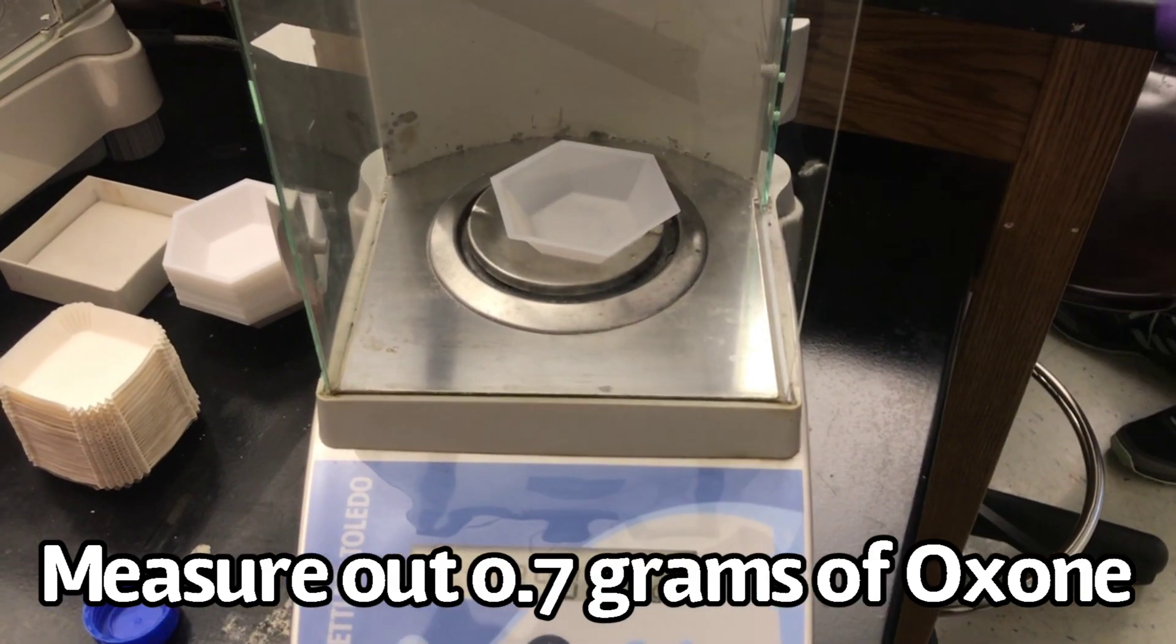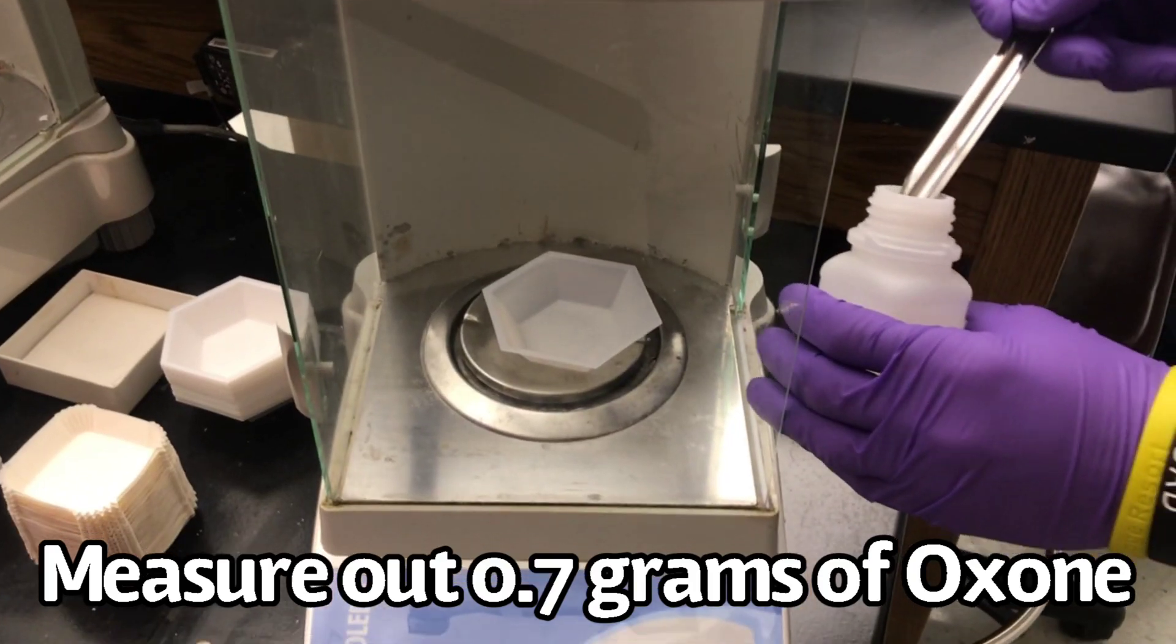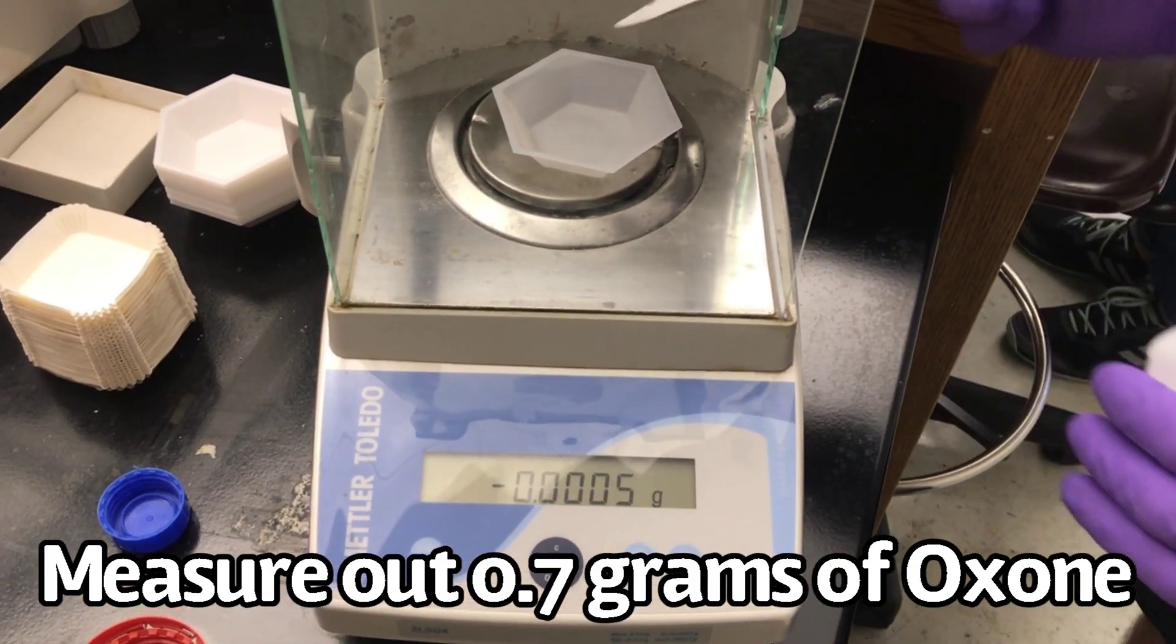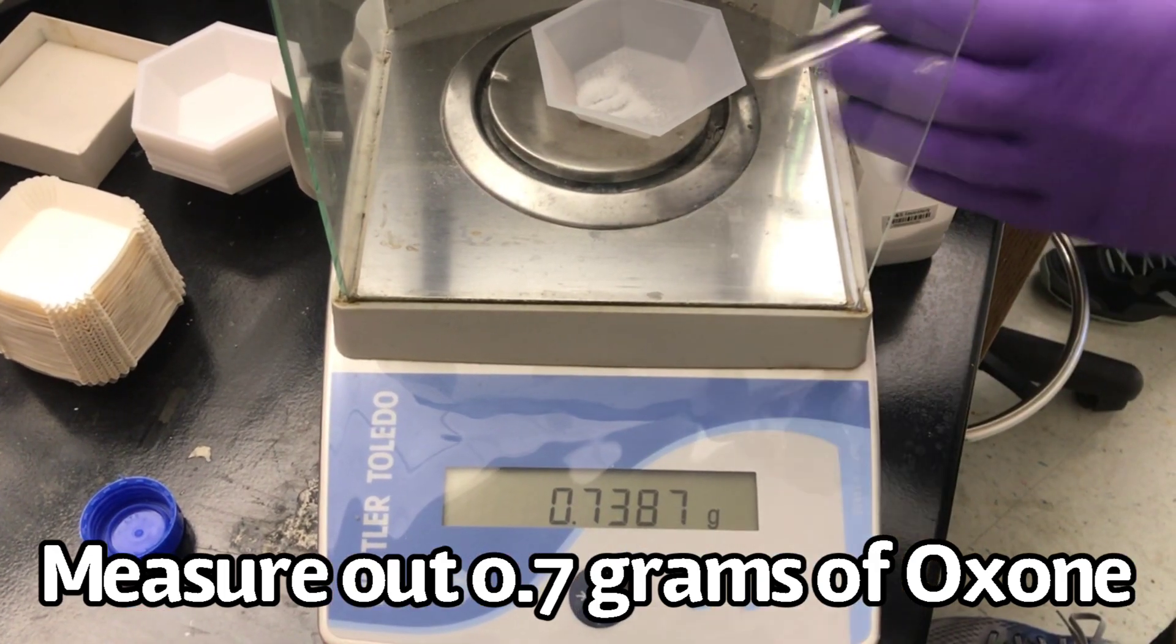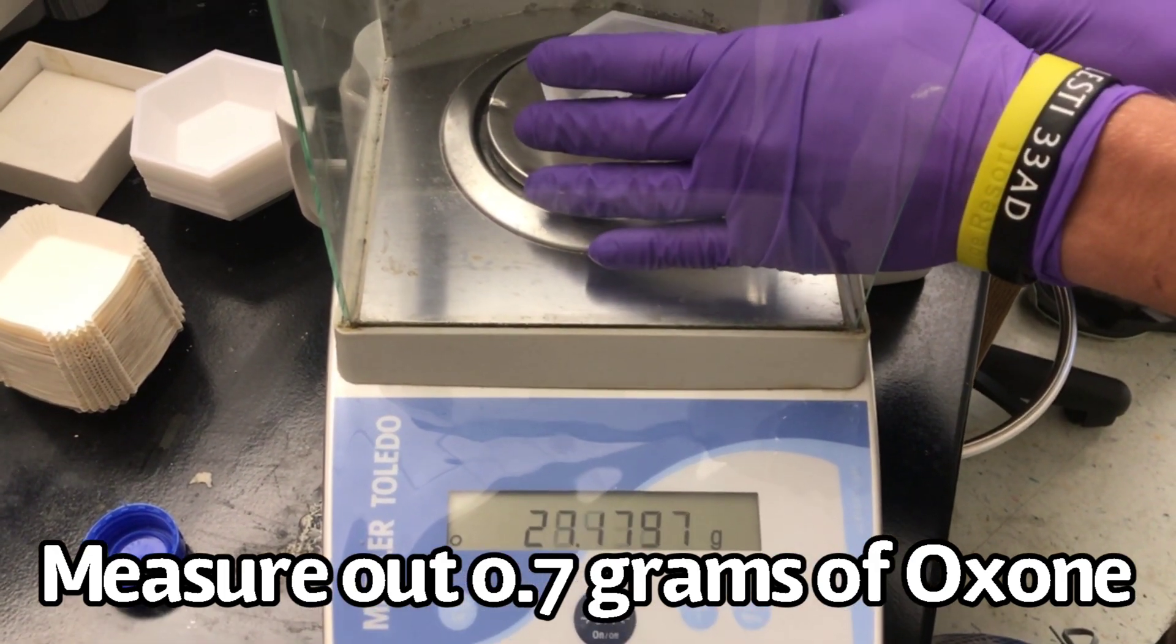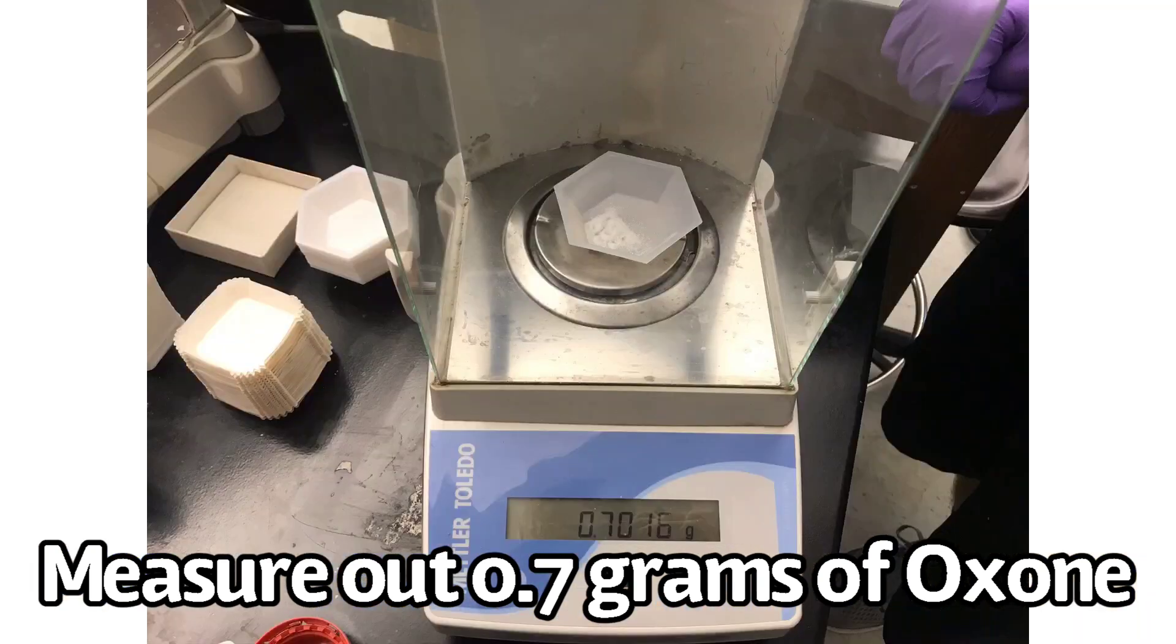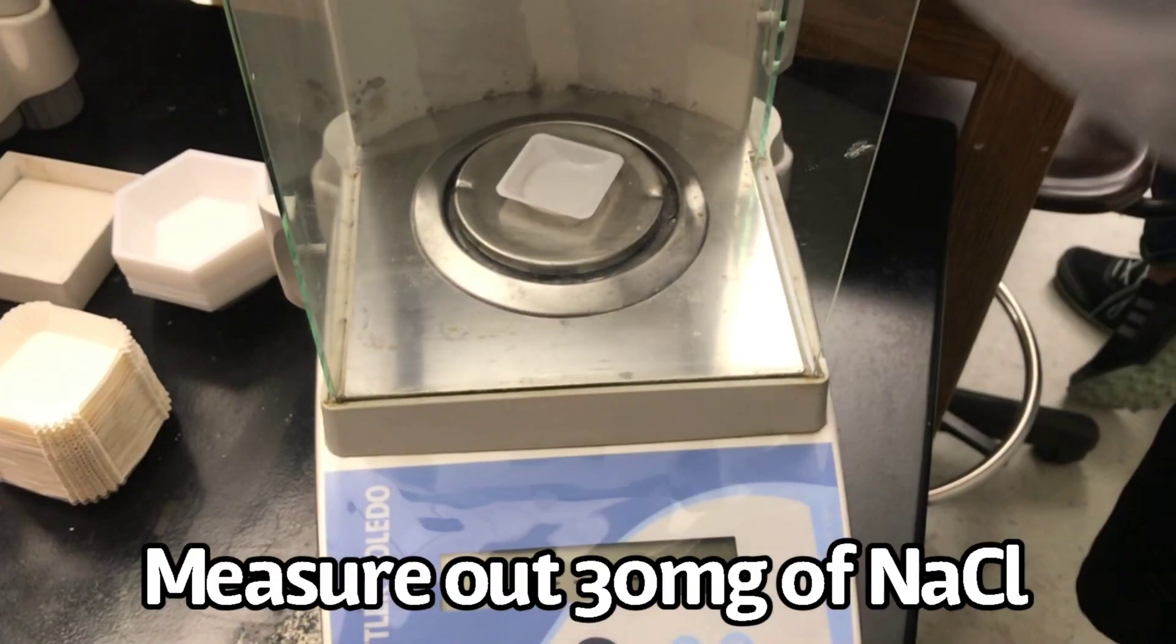Measure out 0.7 grams of oxone. Next, measure out 30 milligrams of sodium chloride.